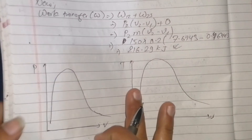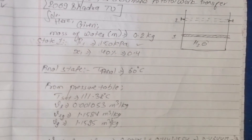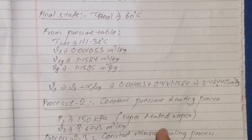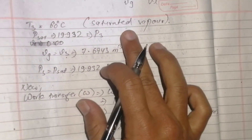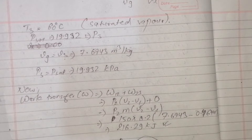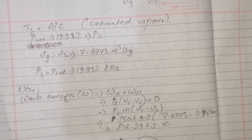On the PV diagram, step 1-2 represents a superheated vapor process. The state transitions are shown on the diagram.